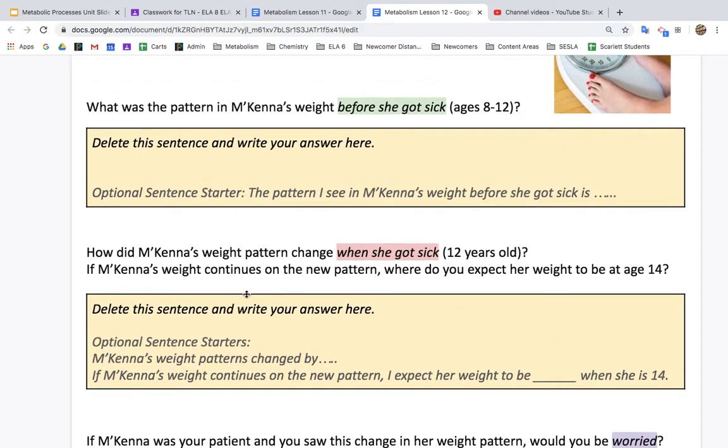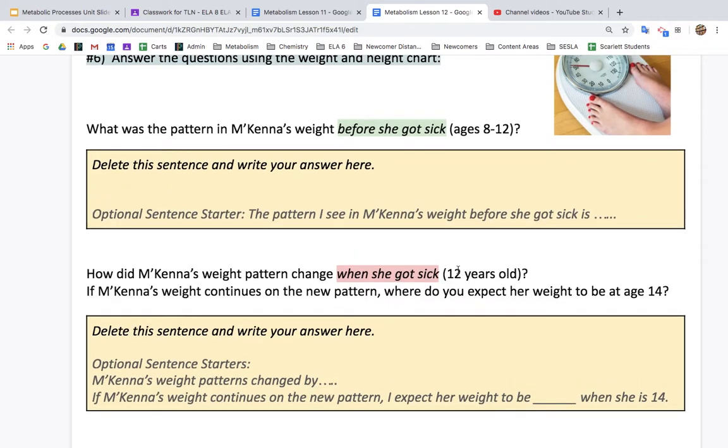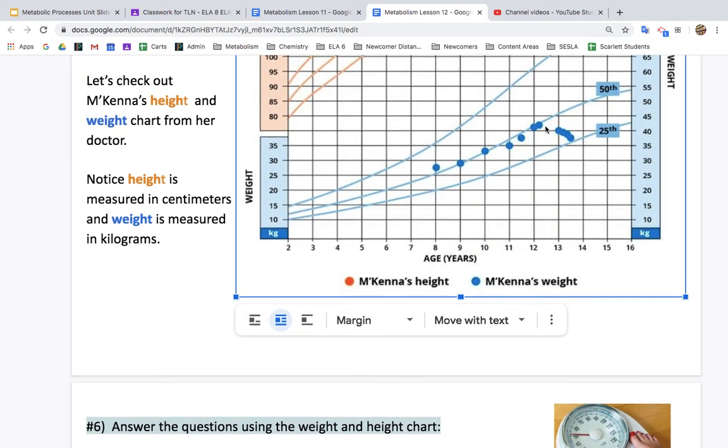So I would say McKenna's weight started getting less. If her weight continues, so if she continues like this, by the time she's 14, I would expect her to be 35 kilograms the way that it's going now. By 14, 35 kilograms.